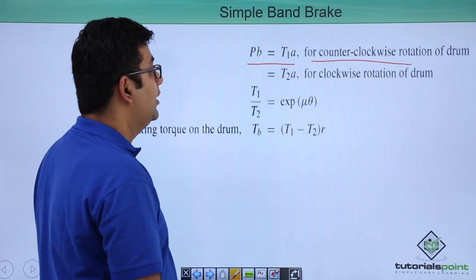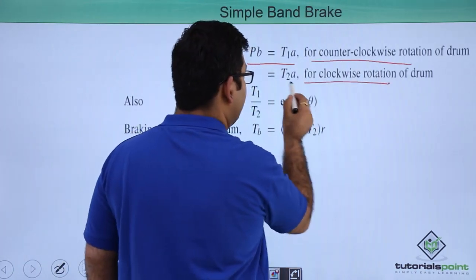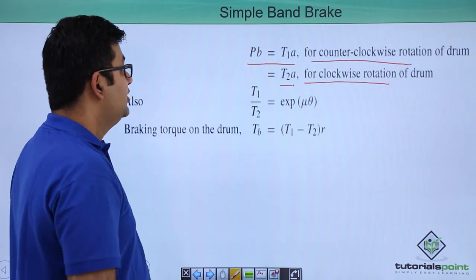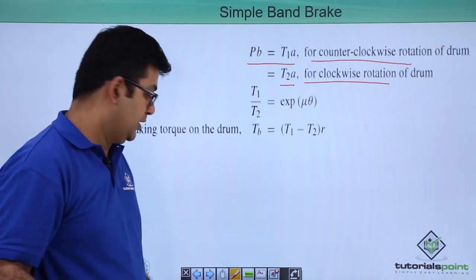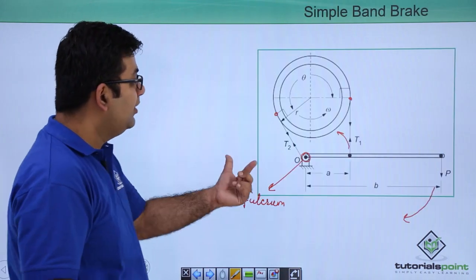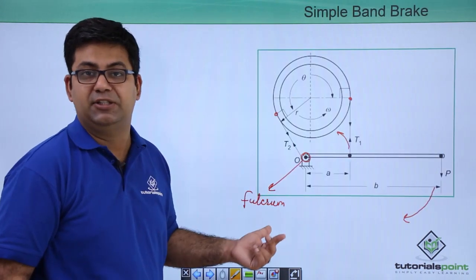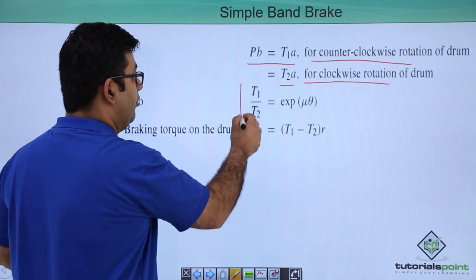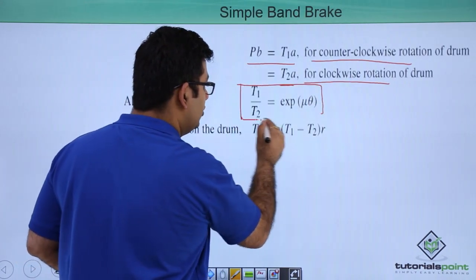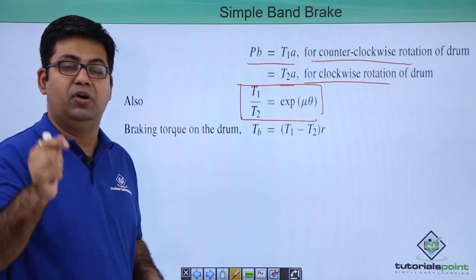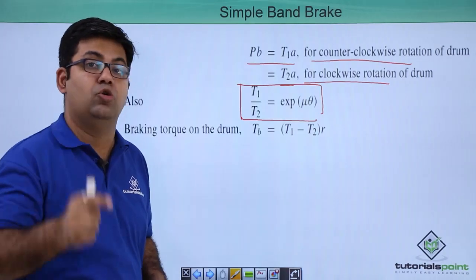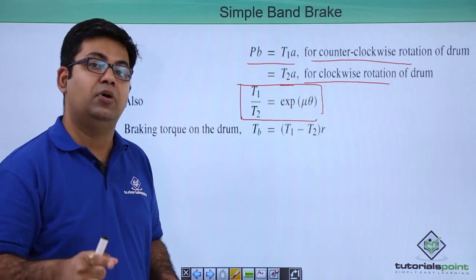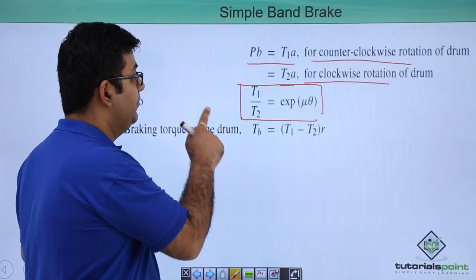If it starts to go in the clockwise rotation, then it becomes T2 into A. So you have the two tensions. This is more or less resembling a simple pulley in a belt system. And that is the formula that you use to calculate the ratio of the tensions. And in this case, this can be used to find out the ratio of the tension in a band.